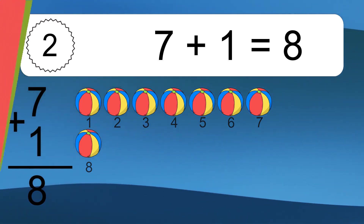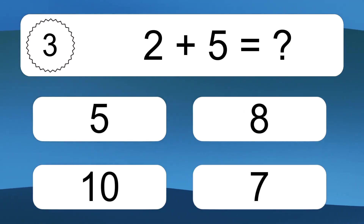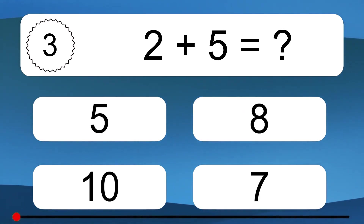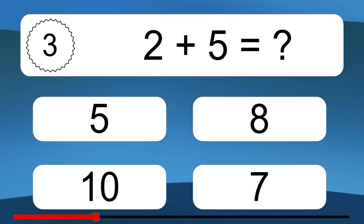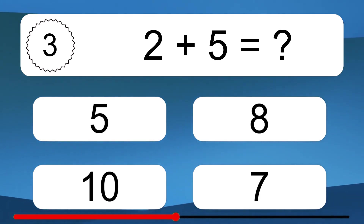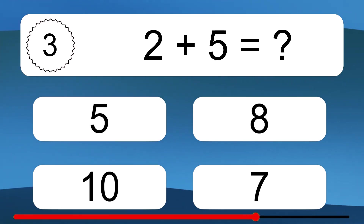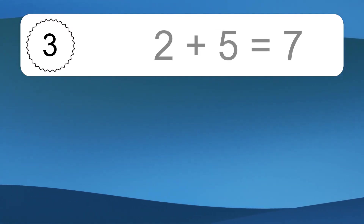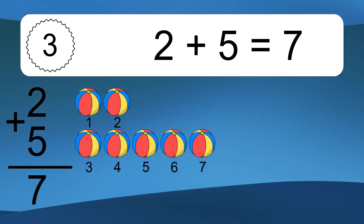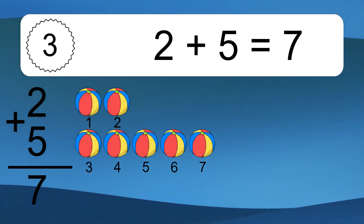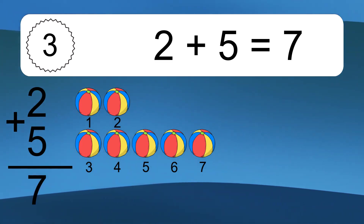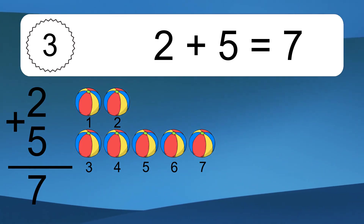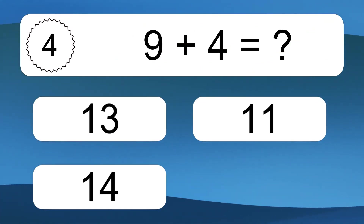2 plus 5 equals what? 2 plus 5 equals 7. Let's count it. 1, 2, 3, 4, 5, 6, 7.